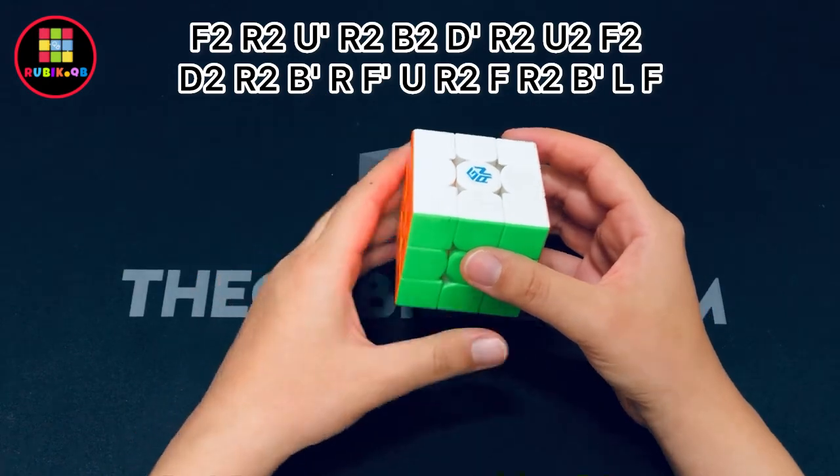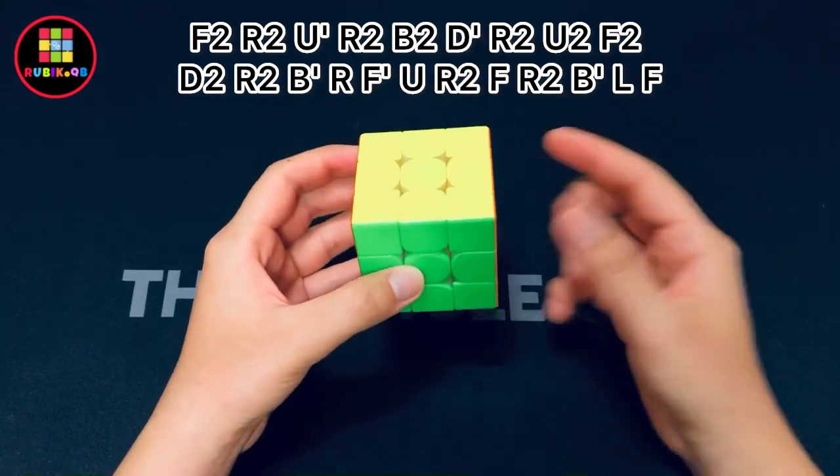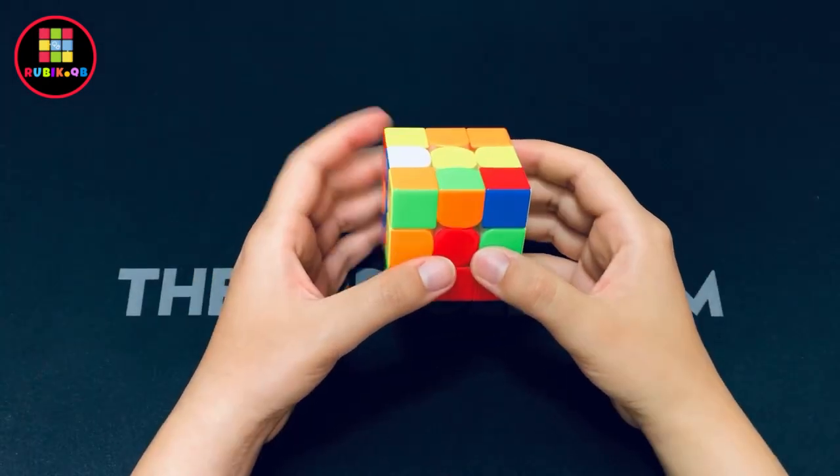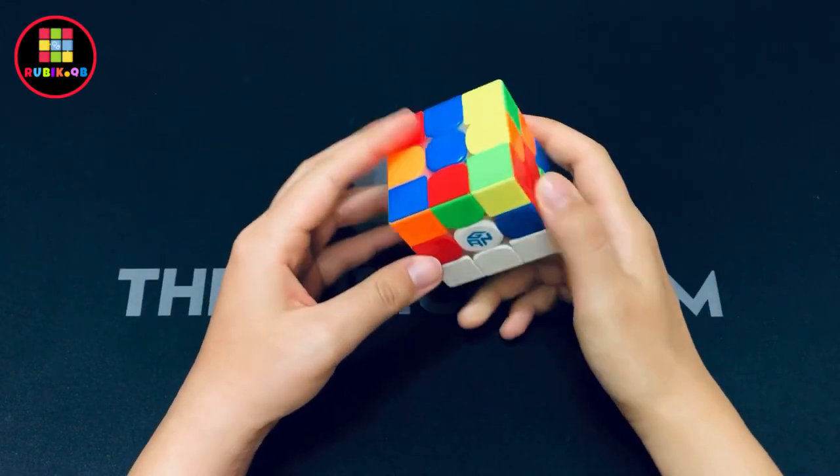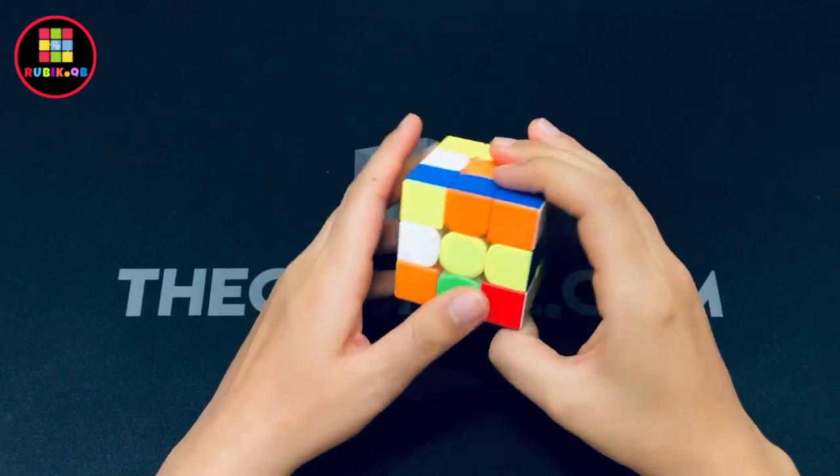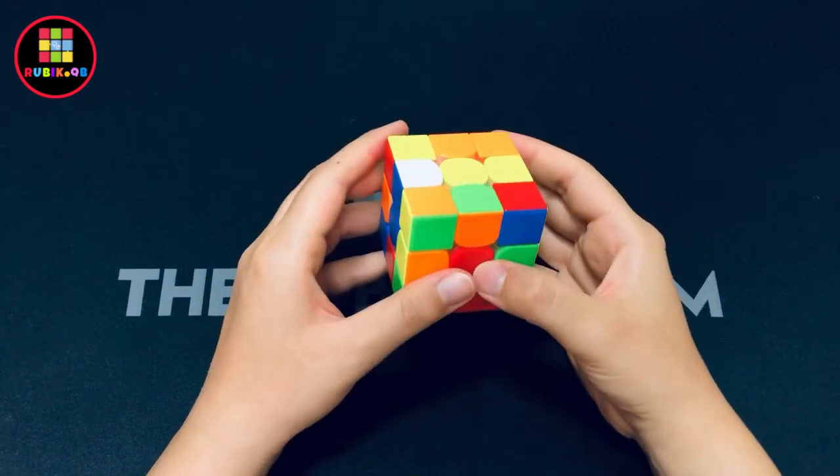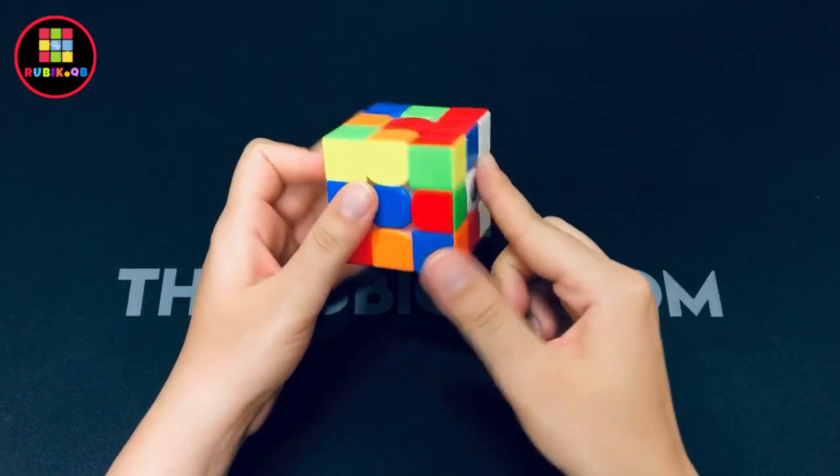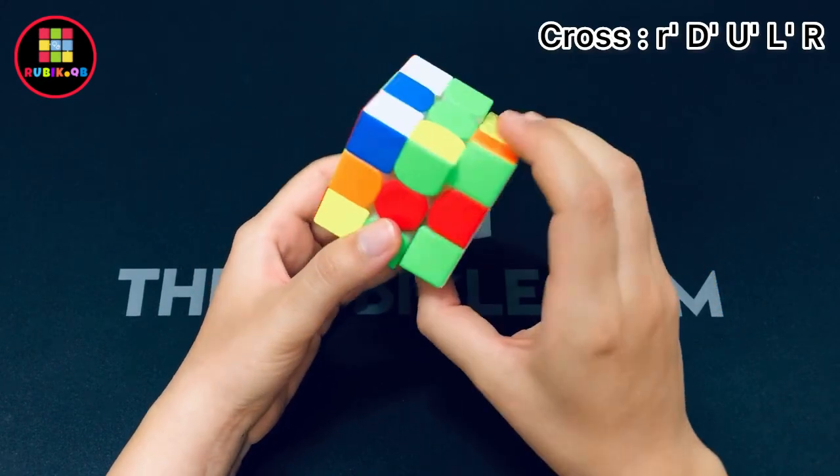The scramble looks pretty easy, and the cross pieces are there, there, there, and there. There's a solve right there. For solving these two, he did white R prime and D prime. As he was doing a D prime move, he solved the second pair as well, and then he went